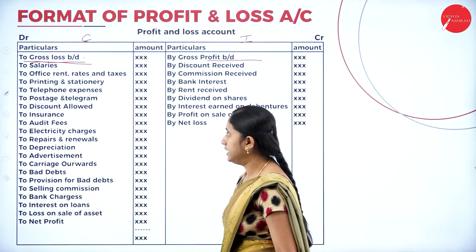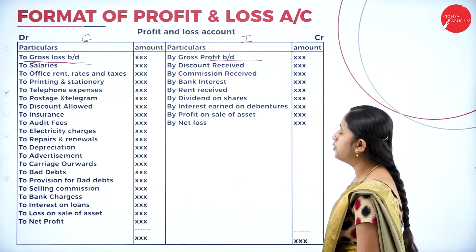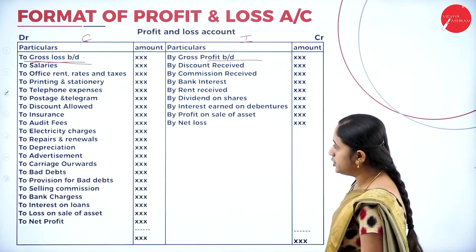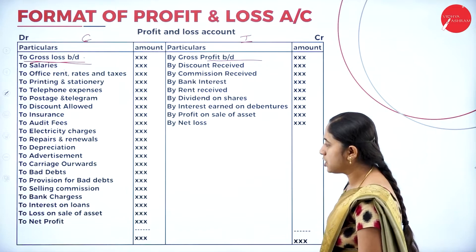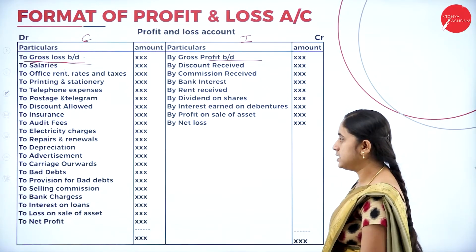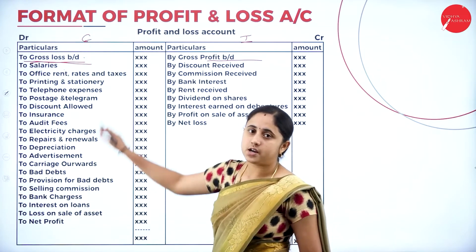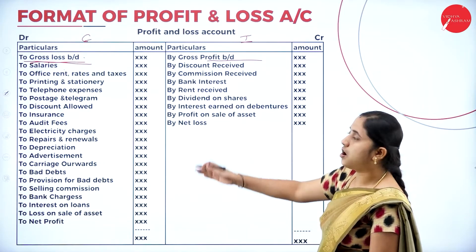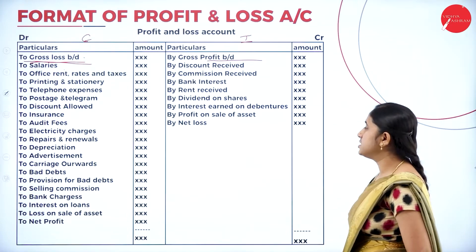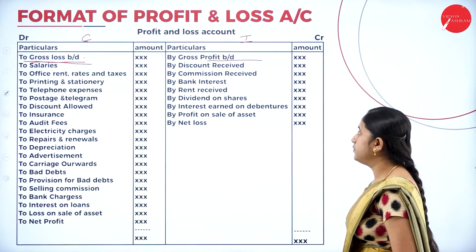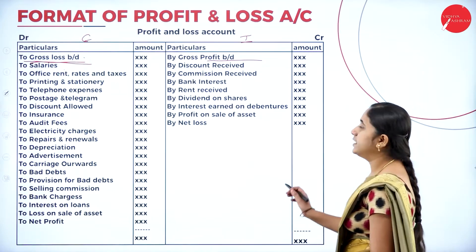Indirect expenses on the debit side include: salary, office rent, taxes, printing and stationery, telephone expenses, postage and telegram, discount allowed, insurance, audit fee, electricity charges, repairs and renewals, depreciation, advertisement, carriage outward, bad debts, provision for bad debts, selling commission, bank charges, interest on loan, and loss on sale of assets. Indirect income on the credit side includes: discount received, commission received, bank interest, rent received, dividend on shares, interest earned on debentures, and profit on sale of assets.